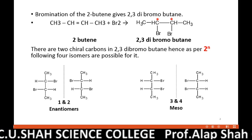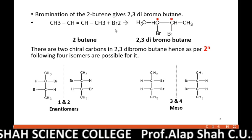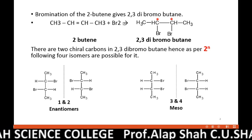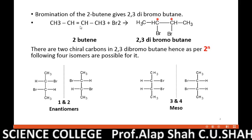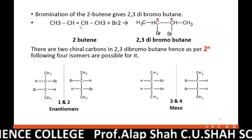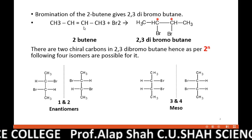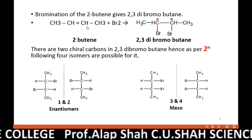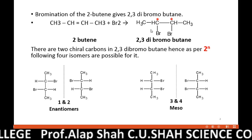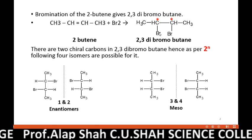Here you can see that 2-butene, when it reacts with bromine, it is an addition reaction. Both bromine atoms will get attached at both doubly bonded carbons, the double bond turns into a single bond, and as a result we are getting 2,3-dibromobutane.